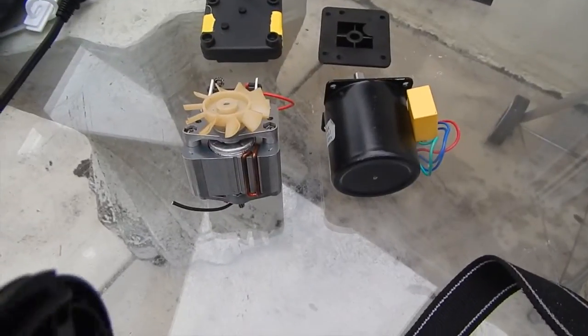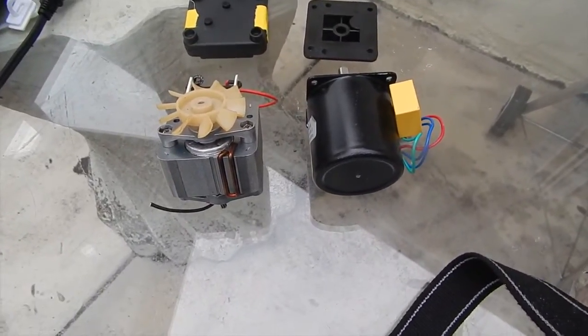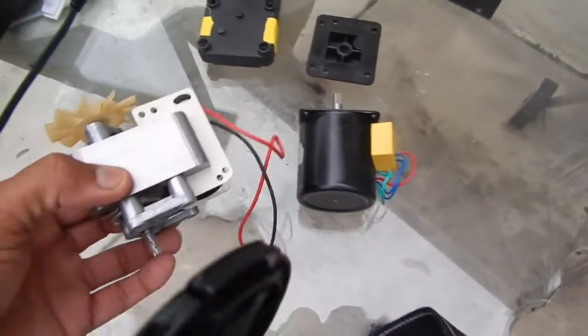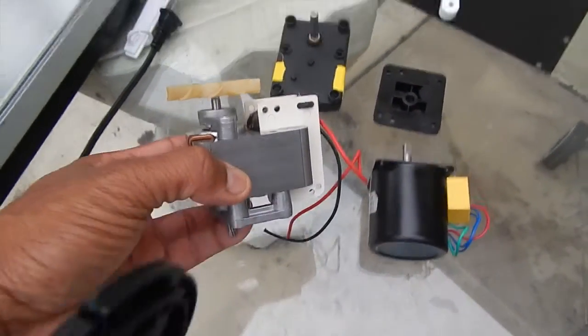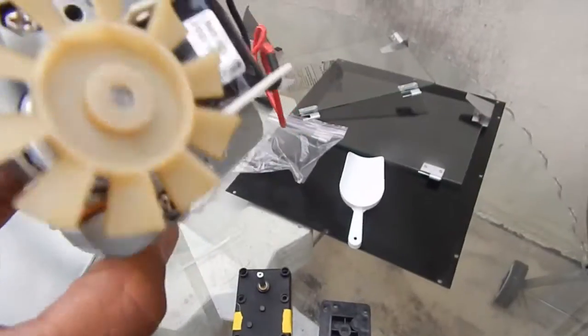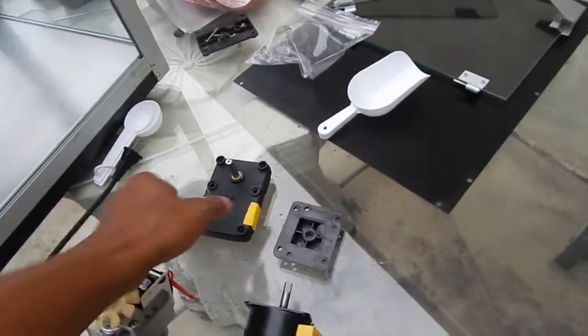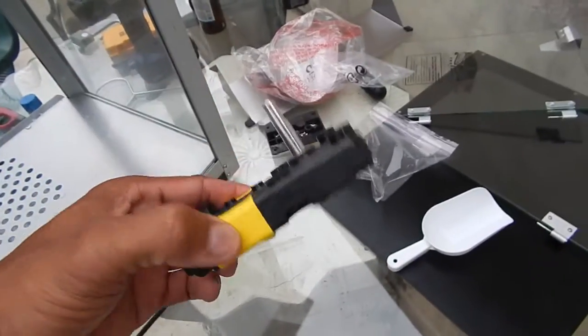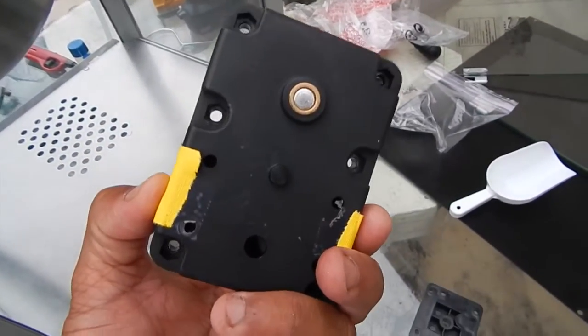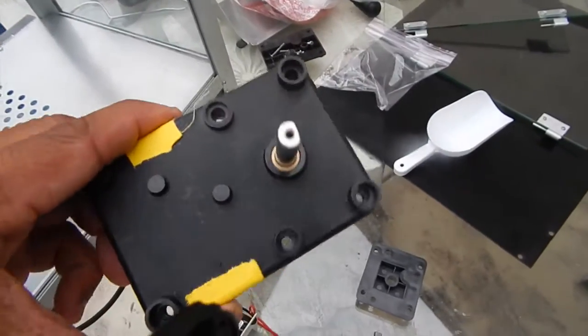Today we'll be replacing a C frame shaded pole motor with a synchronous motor, which is the new motor that they've installed in the newer machines. As you can see, this C type motor runs on a gearbox and the gears are made out of plastic which have a tendency to strip.